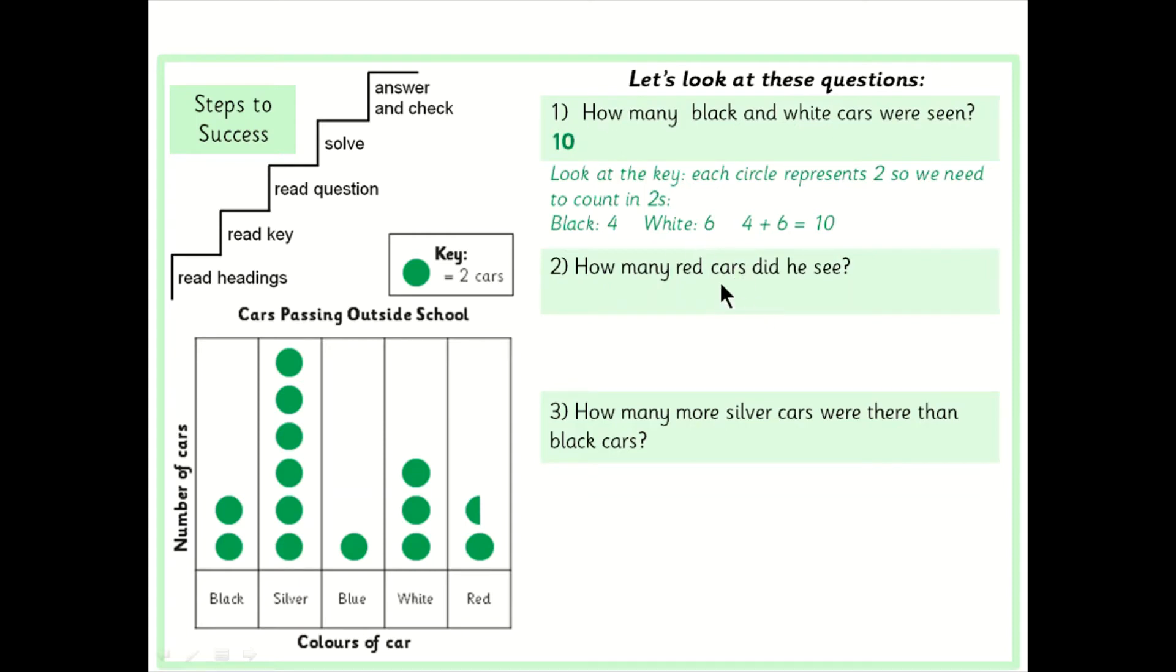How many red cars did he see? Okay let's look at this question two. So I'm looking here at the red cars now I know one circle represents two but I've got half a circle here. It's quite simple you just need to half the number half of two is one. So two add one equals three.